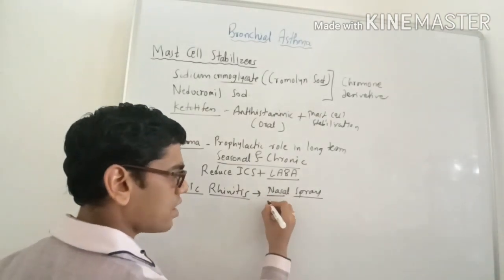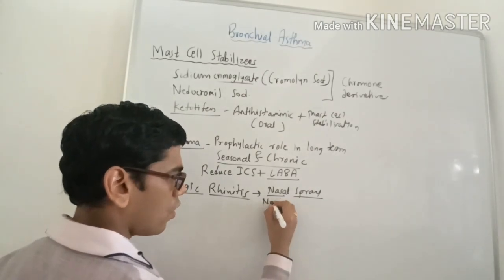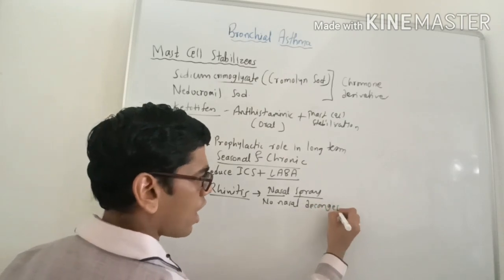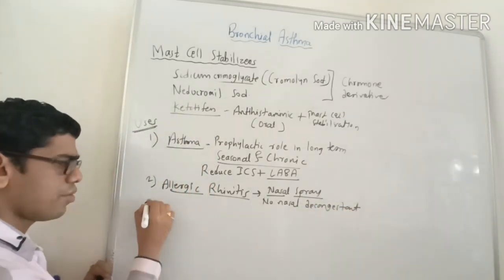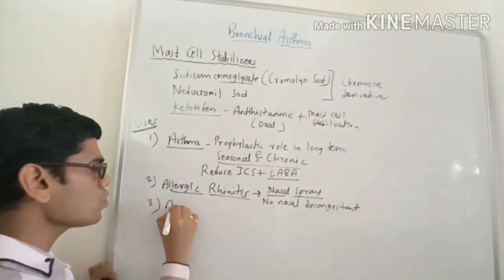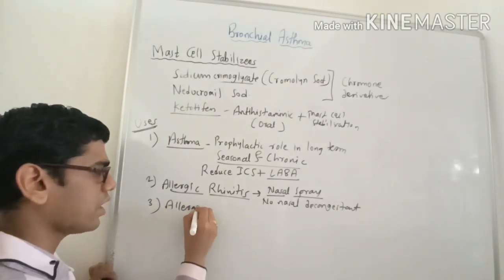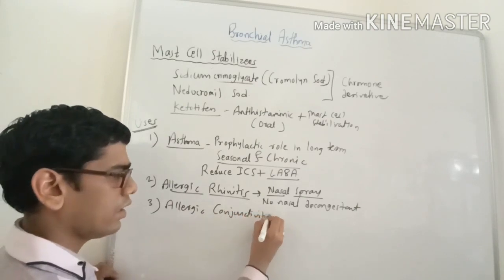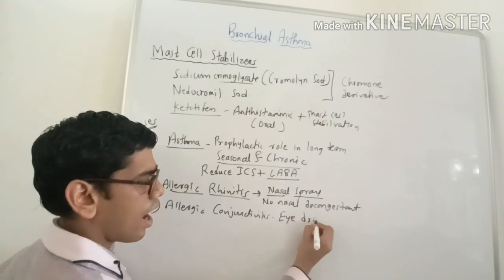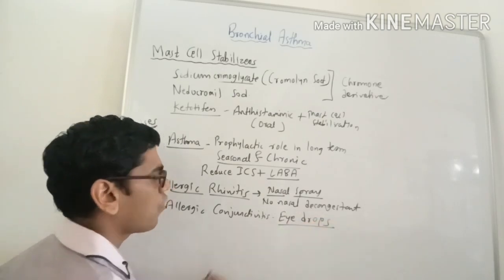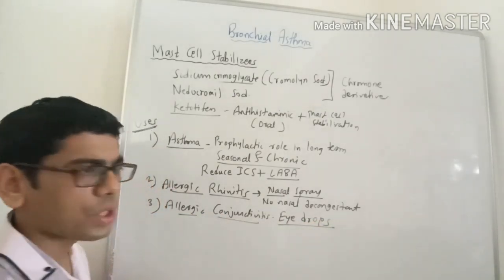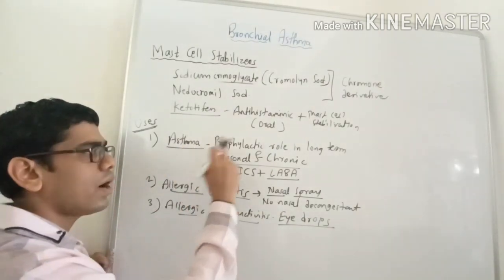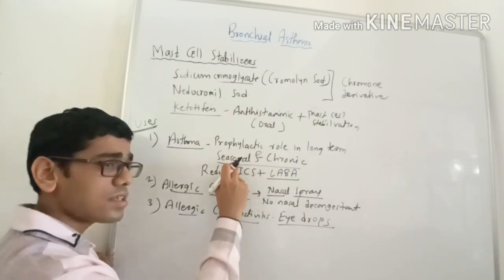It has been said that they don't have a nasal decongestant property, but they can be given in addition to or as a sole drug in allergic rhinitis patients. The third use of mast cell stabilizers is allergic conjunctivitis, where they are given in the form of eye drops. So there are three uses: prophylactic role in asthma, allergic rhinitis by nasal spray, and allergic conjunctivitis by eye drops.